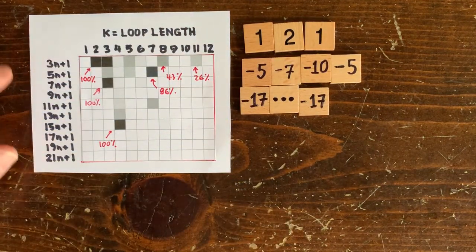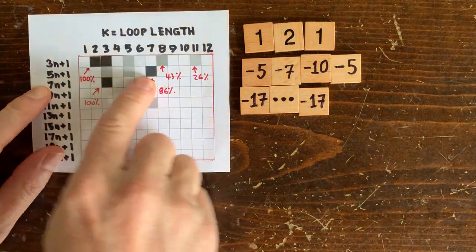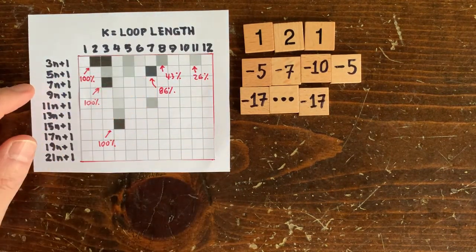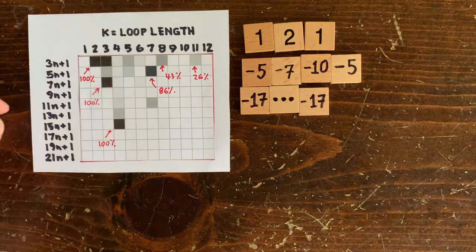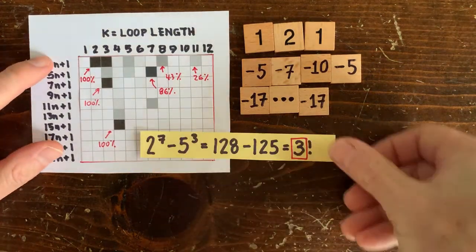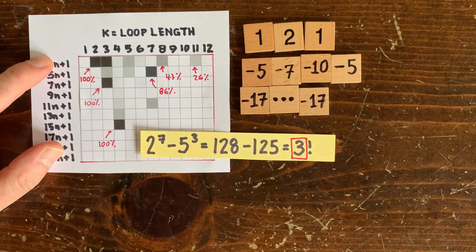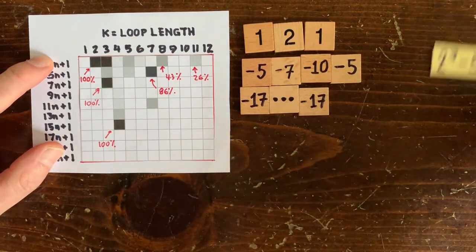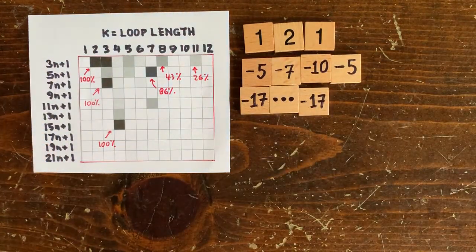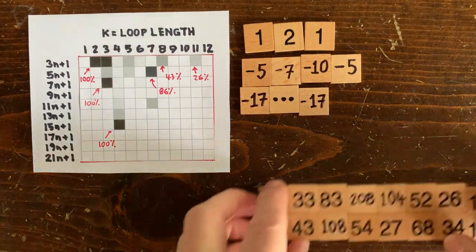Okay, how about the 5n plus 1 problem? Well, this box at loop length 7 is a potential goldmine, because the denominator 2 to the 7th minus 5 cubed is 3, which is about as low as you can get. And there's actually an 86% chance of a loop here. And we actually find two loops. One starts with 13, and the other with 17.